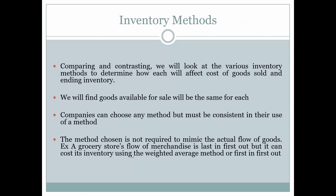Comparing and contrasting, we'll look at how each inventory method affects cost of goods sold and ending inventory. Each method gives a different cost of goods sold and a different ending inventory. However, goods available for sale will be the same for each, because beginning inventory plus purchases equals goods available for sale, and those amounts are objective and consistent across all four methods.